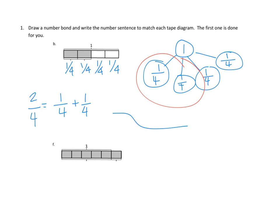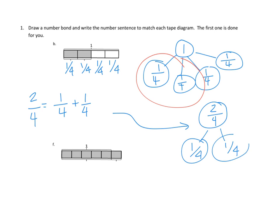So if we wanted to express our specific problem in a number bond form, we would say that 2/4 is made up of two things: 1/4 and another 1/4. So over here, this is an expression of just this part of the problem, and this up here is an expression of the whole diagram before we started deciding how many pieces we wanted. We could do the number bond for all of the pieces, or we could do the number bond for just the gray shaded pieces. In problem 1F below, we'll see an example where we're just going to do the number bond for the pieces that we have.